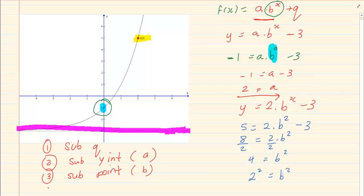4 is 2 to the power of 2, B squared. Once the exponential powers are the same, they can cancel, we have B is equal to 2.